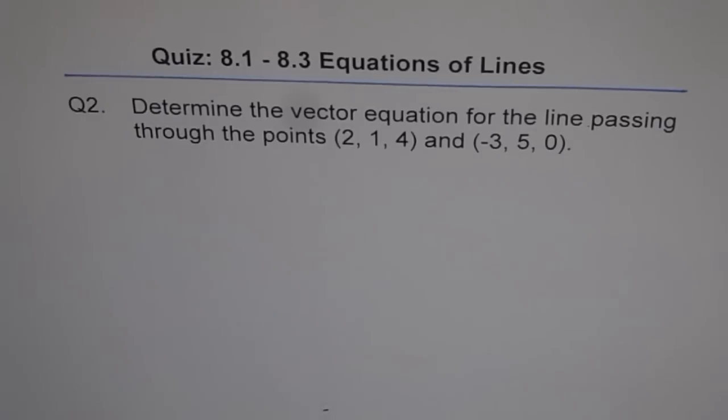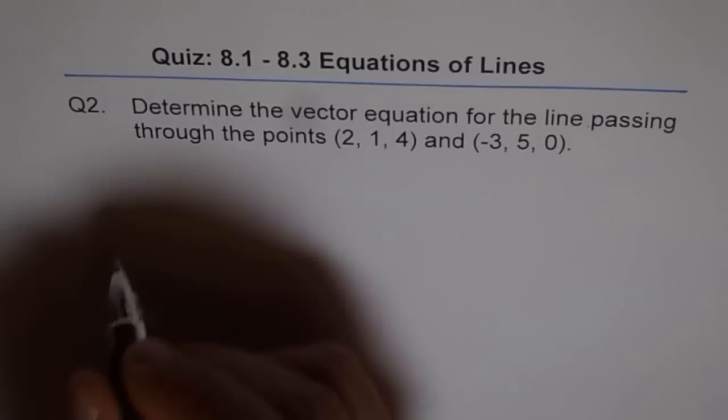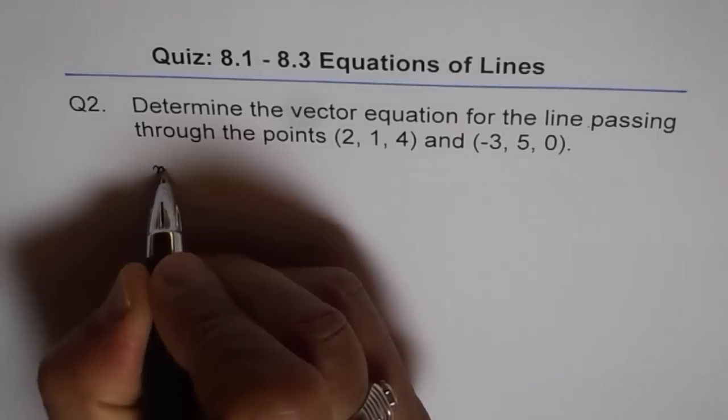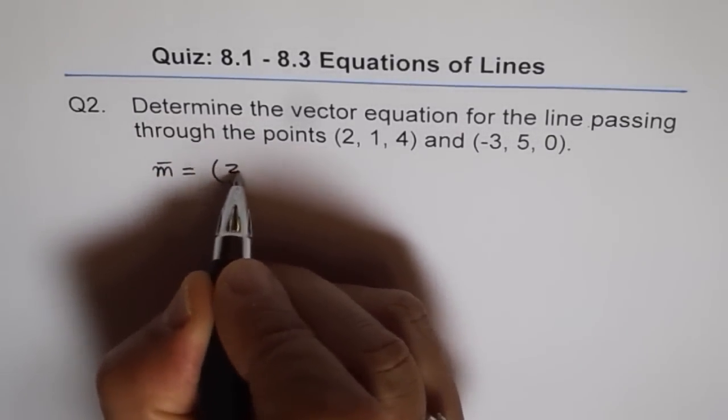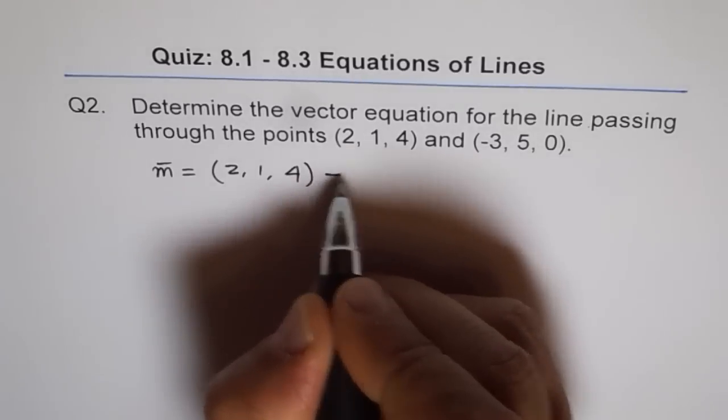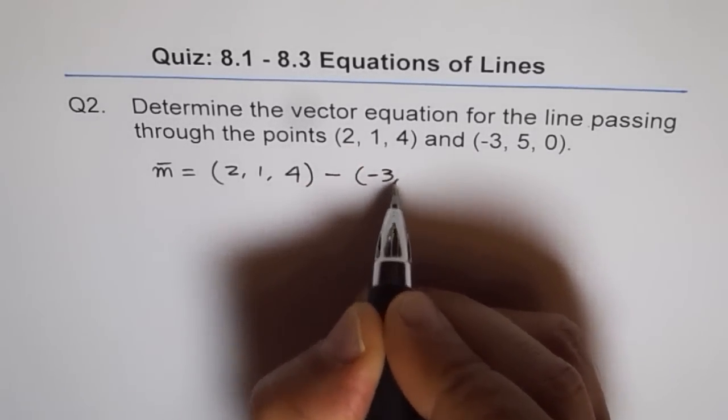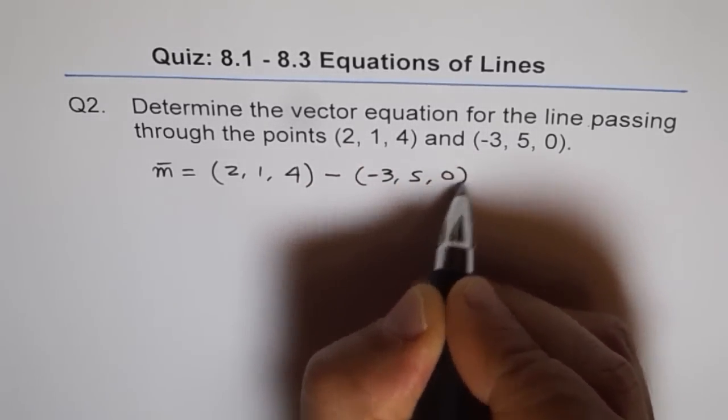Well, the two points are given to us and so we can find their direction. So, direction vector m is equal to (2, 1, 4) minus (-3, 5, 0).